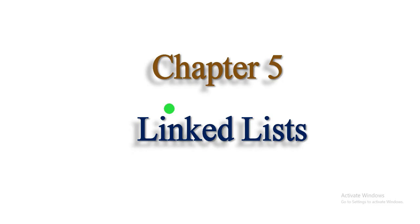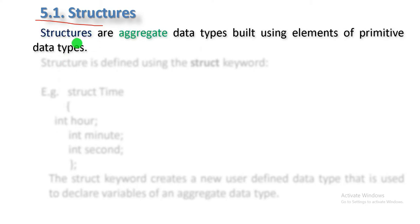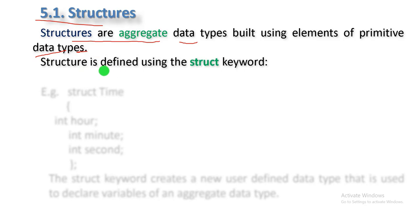The Linked List is called Structure. The pre-request course is called Structure. An aggregate data type is built using elements of primitive data types in order to define a collection of data types. We call it Structure. Structure is defined using the struct keyword.